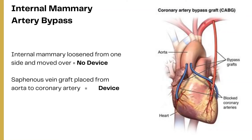Another important point for coding coronary artery bypass procedures is the internal mammary artery bypass procedure. In this type of bypass, only one end of the internal mammary artery is cut and the other end is moved to a new location where the blockage is. There is no actual graft obtained from another location — unlike a saphenous vein graft harvested from the leg. For internal mammary artery grafts, it is still a pedicled graft, so the device value is coded as no device.